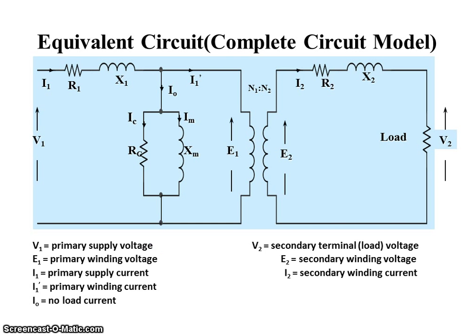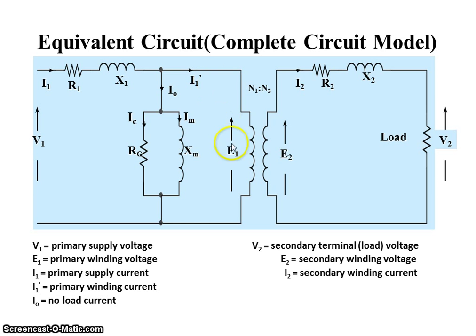The equivalent circuit is shown in the figure. It is the complete circuit model. The primary side is shown by one and the secondary side is shown by two. V1 is the primary voltage, I1 is the primary winding current, R1 is the primary winding resistance, X1 is the primary winding reactance. I1 dash is the current which is going to produce the EMF. IC is the core loss current and IM is the magnetizing current.